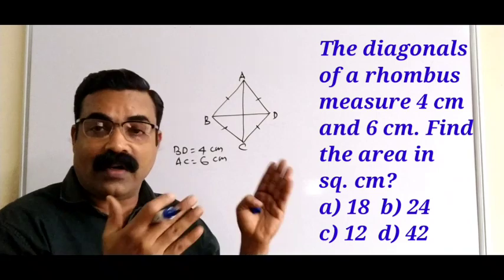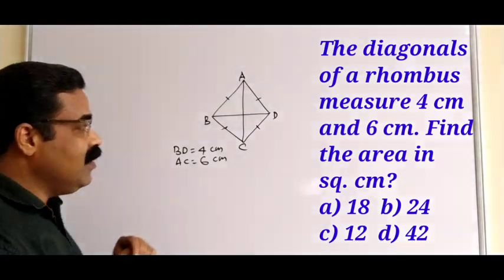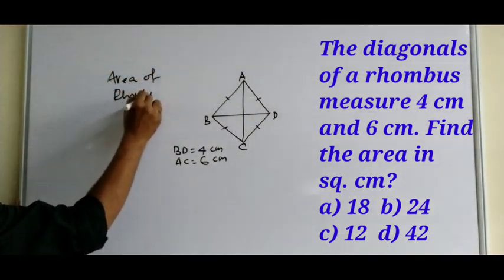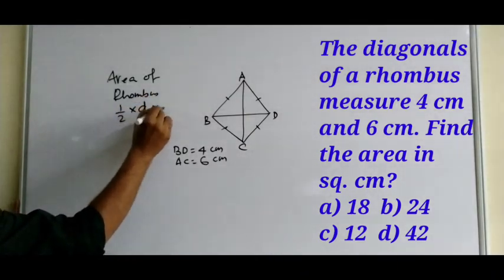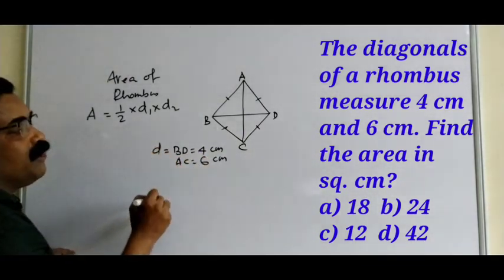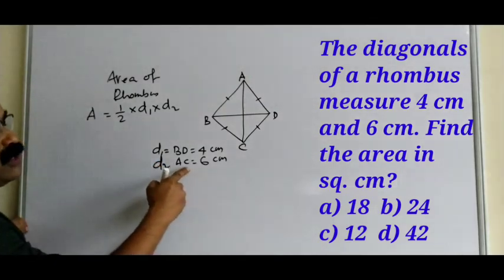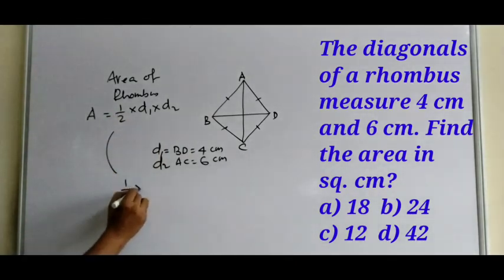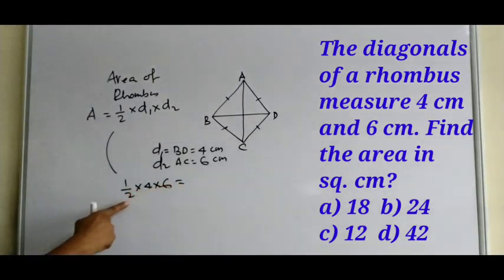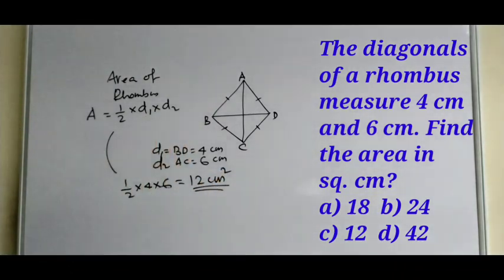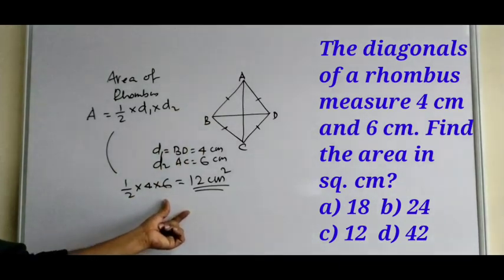For those who don't know what a rhombus is: the area of a rhombus is given by the formula — Area = half × d1 × d2, where d1 and d2 are the diagonals. Here d1 is four centimeters and d2 is six centimeters. Putting the values: half × 4 × 6 = half × 24 = 12 cm². So the area of this rhombus is 12 square centimeters.